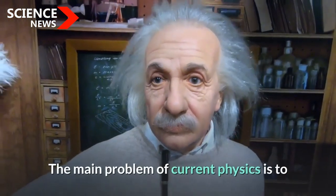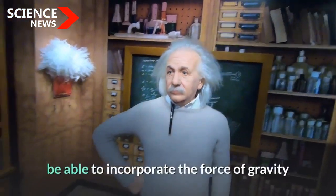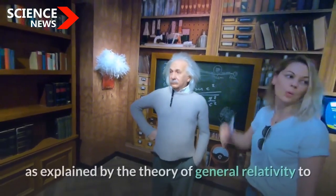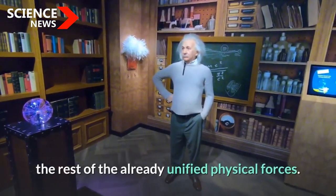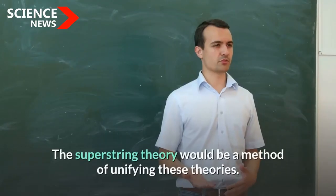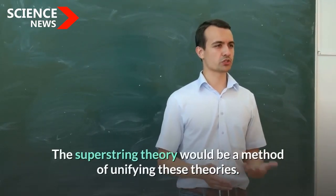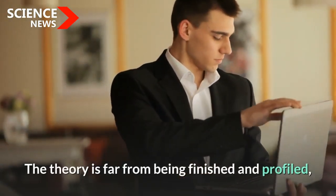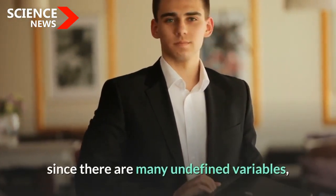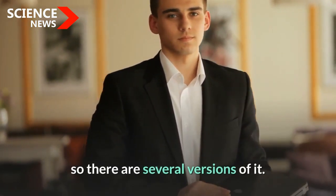The main problem of current physics is to be able to incorporate the force of gravity as explained by the theory of general relativity to the rest of the already unified physical forces. Superstring theory would be a method of unifying these theories. The theory is far from being finished and profiled, since there are many undefined variables, so there are several versions of it.